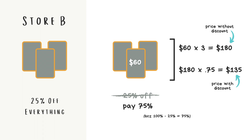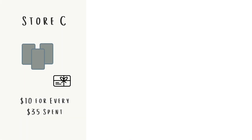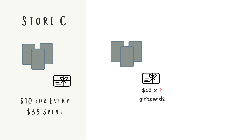So regardless of how you do it, Store A is still, so far, the cheapest. Store C has the most annoying kind of sale, where you get $10 towards your future purchases for each $35 you spend, which is how they get you to come back.